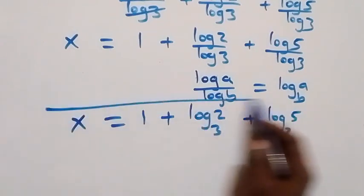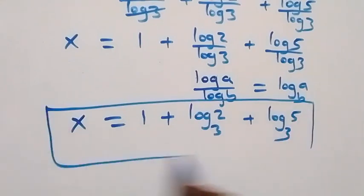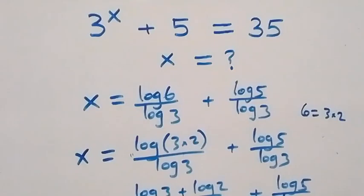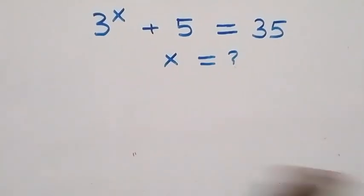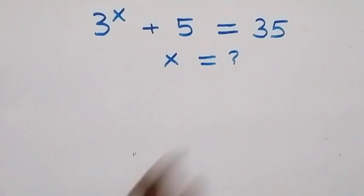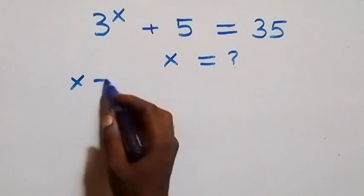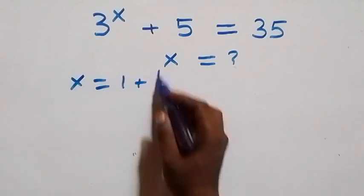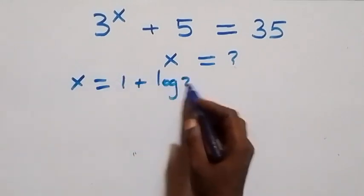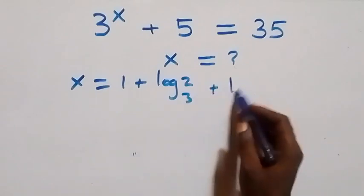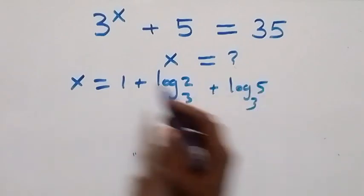So here we have the value of x as 1 plus log₃2 plus log₃5. Now let's check if this satisfies the given problem. We have x equals 1 plus log 2 base 3 plus log 5 base 3.